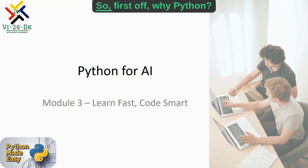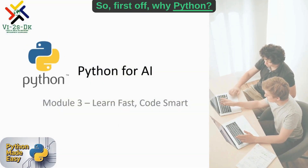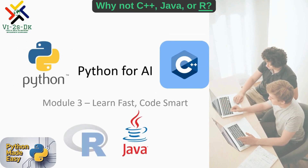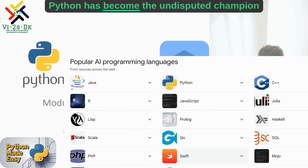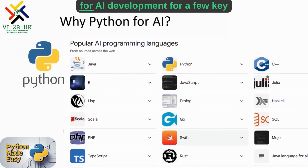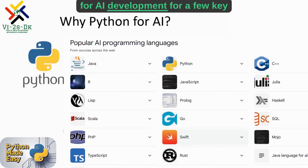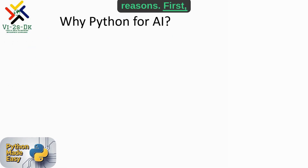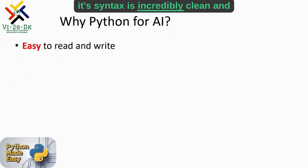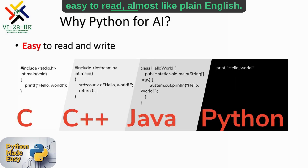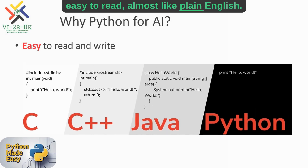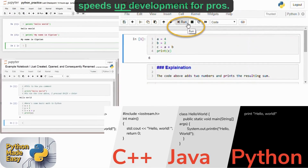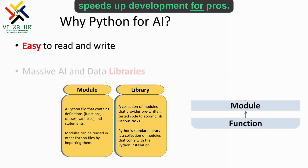So, why Python? Why not C++, Java, or R? Python has become the undisputed champion for AI development for a few key reasons. First, its syntax is incredibly clean and easy to read, almost like plain English. This makes it perfect for beginners and speeds up development for pros.